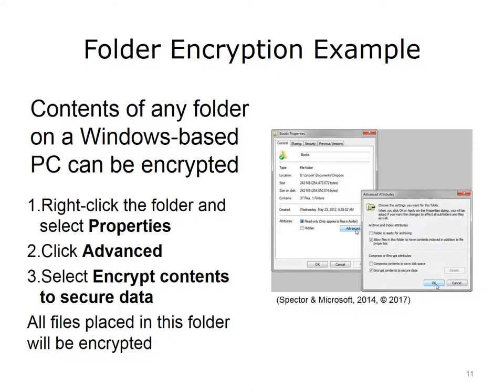The contents of any folder on a Windows-based PC can be encrypted. To encrypt an existing folder, go to Windows File Explorer and locate the folder to be encrypted. Right-click on it and select Properties from the context menu. The Properties dialog box opens. Next, click Advanced, then click Encrypt Contents to Secure Data to encrypt all of the documents in the folder. Click OK to apply the setting to the folder and all of its contents. Subsequently, all files placed in this folder will be encrypted, and can be viewed only when the user is logged in with the username and password used to encrypt the folder. All other user accounts will receive an Access is Denied message when they try to open any file in the encrypted folder.